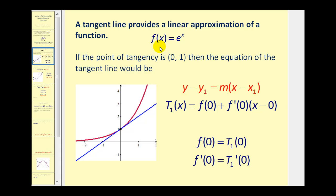Now let's take a look at how we're going to come up with the formula to create the polynomial approximation. If we take the function f of x equals e to the x, and determine the equation of the tangent line at the point (0, 1), here's the equation of a line in point-slope form. If we add y-one to the other side, that would be f of zero; f prime of zero would represent the slope, and x sub one is the x-coordinate of the point of tangency. At this point, the two function values agree, and so do the derivatives at x equals zero.